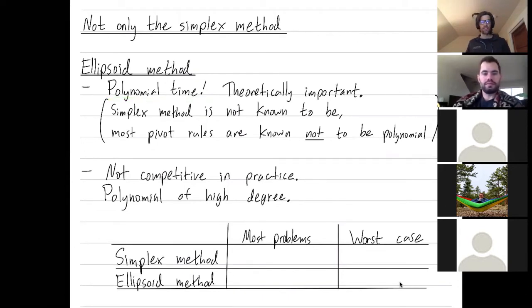So the simplex method, it's not known whether it can solve linear programming problems in polynomial time or not. There's so many different pivot rules you could choose and maybe somebody could come up with a new clever pivot rule that does lead to polynomial time algorithms.